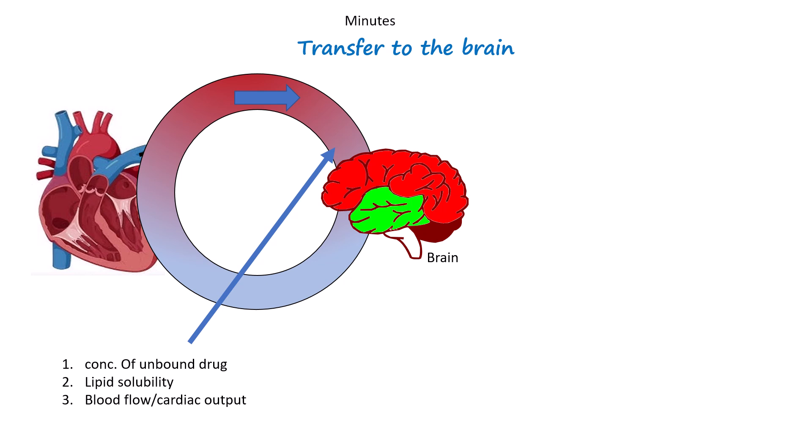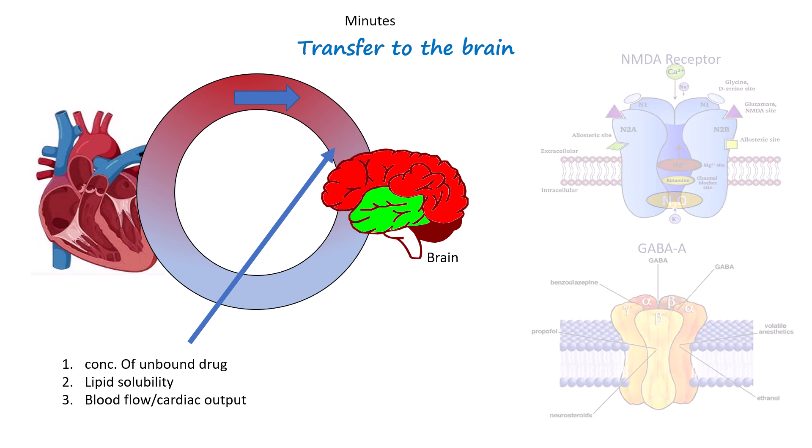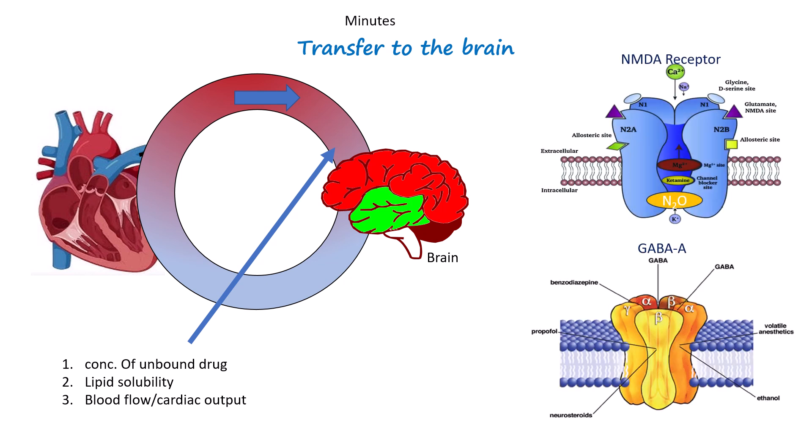Once the drug penetrates CNS tissue, each drug acts at its specific receptors — such as GABA, NMDA, or ACh receptors — and exerts its effect. In our case, the effects can be hypnosis, sedation, or pain relief.